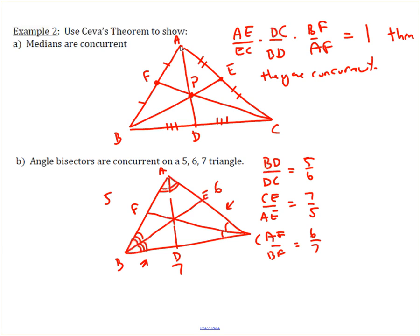And if you multiply those three together, you get BD over DC times CE over AE times AF over BF, which is the condition needed to meet Ceva's theorem.